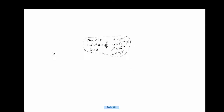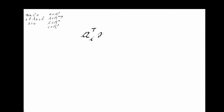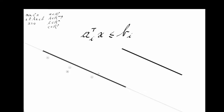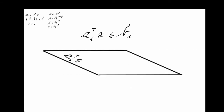In order to understand the geometry of this problem, let's first consider one of the inequality constraints — let's take row number i. If we denote by A_i the row number i of matrix A, this constraint can be written A_i transpose X less or equal to B_i, where B_i is the i-th component of vector B. Now we draw the hyperplane of equation A_i transpose X equal B_i. Note that A_i is actually the normal vector of this hyperplane.